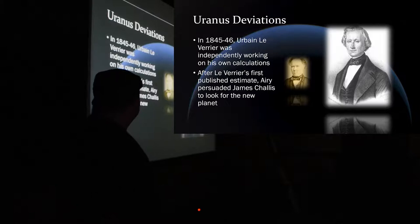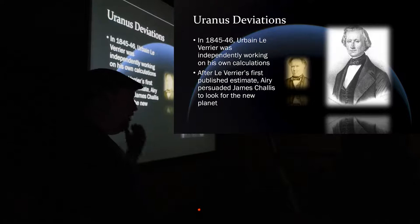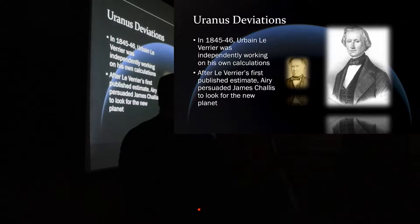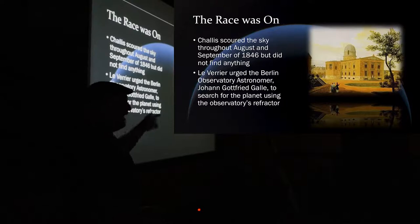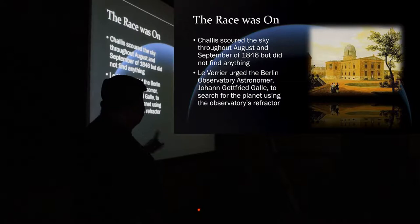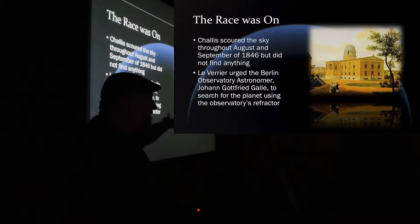As soon as the word was out, because Le Verrier published his estimates, Airy persuaded this astronomer here, his name is James Challis, to start looking for the new planet. So, the race was on. The French didn't like the English, the English didn't like the French. So, there was a race, a space race, if you will, to try and predict and discover where this elusive planet was going to be. So, as Challis is sitting there trying to find this planet using Adams' data, Le Verrier urged the Berlin Observatory, the director of the Berlin Observatory, Johann Gottfried Galle, to use the observatory's refractor to try to find this planet.